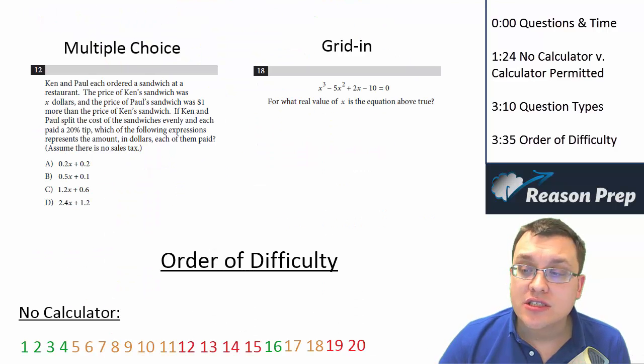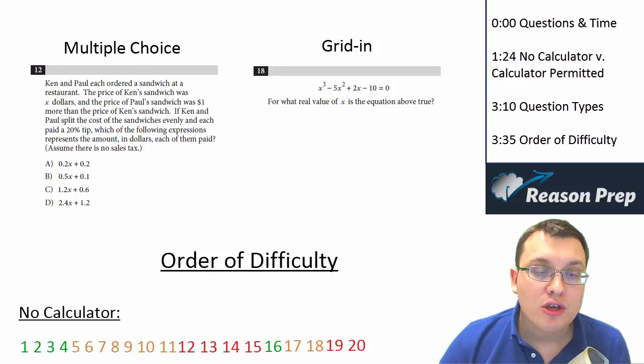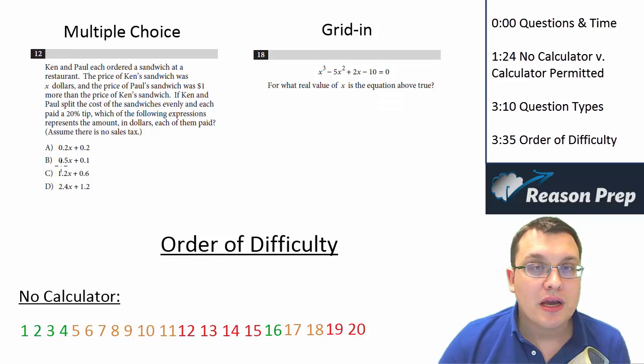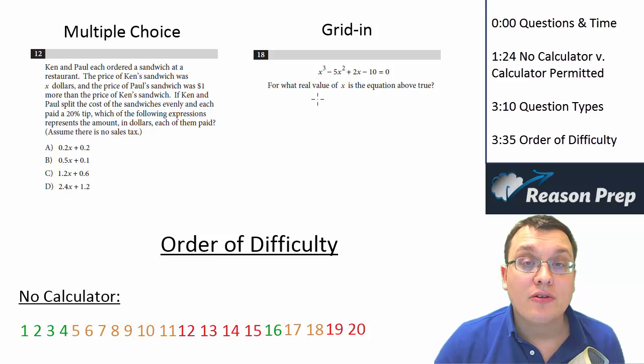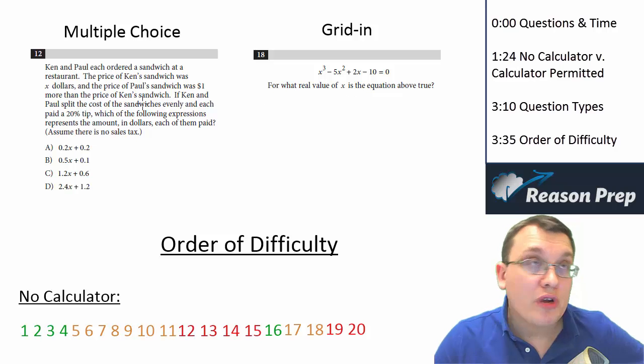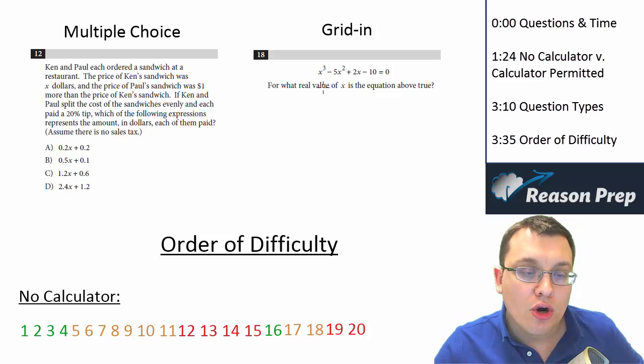There are two question types. You've got multiple choice, which are kind of obvious - you've got four choices and you pick the one that works. Then you've got the grid-ins, the free response, where you have to come up with your own answer, and we're going to talk about how to grid these in with some extra rules and tips later. But these are your two question types. The first three quarters of each section is multiple choice, and the last quarter of it are your grid-ins.